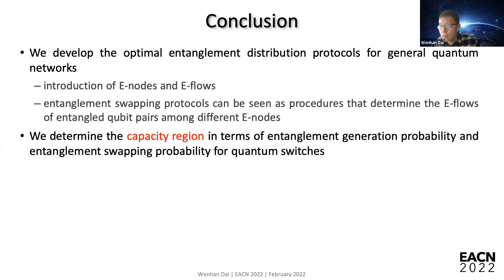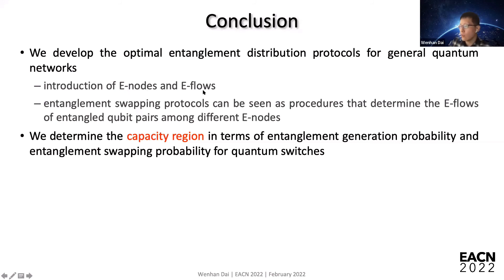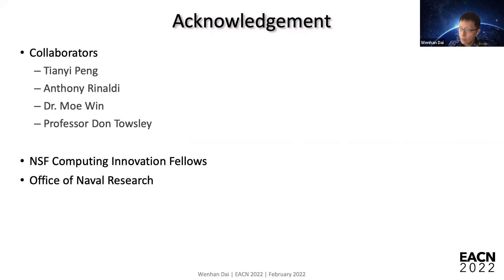To wrap up: we considered a higher layer of network design in quantum networks and developed optimal entanglement distribution protocols for general networks. The key idea is introducing e-nodes and e-flows so the original problem can be transformed into a linear optimization problem. For the special case of a quantum switch, we consider a stability metric and determine the capacity region in terms of entanglement generation and swapping properties.